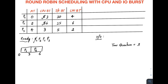P2 is moved back to the tail of the ready queue after its time quantum. Now we give the CPU to P1 again for another three units of time, from 6 to 9.